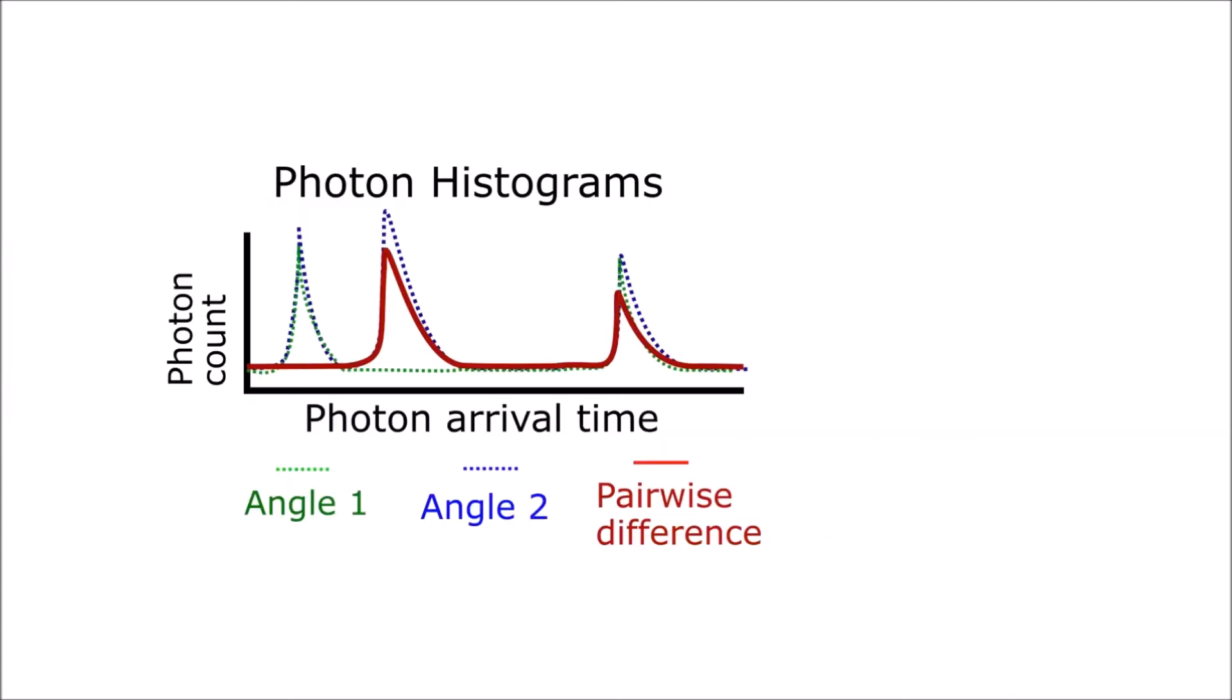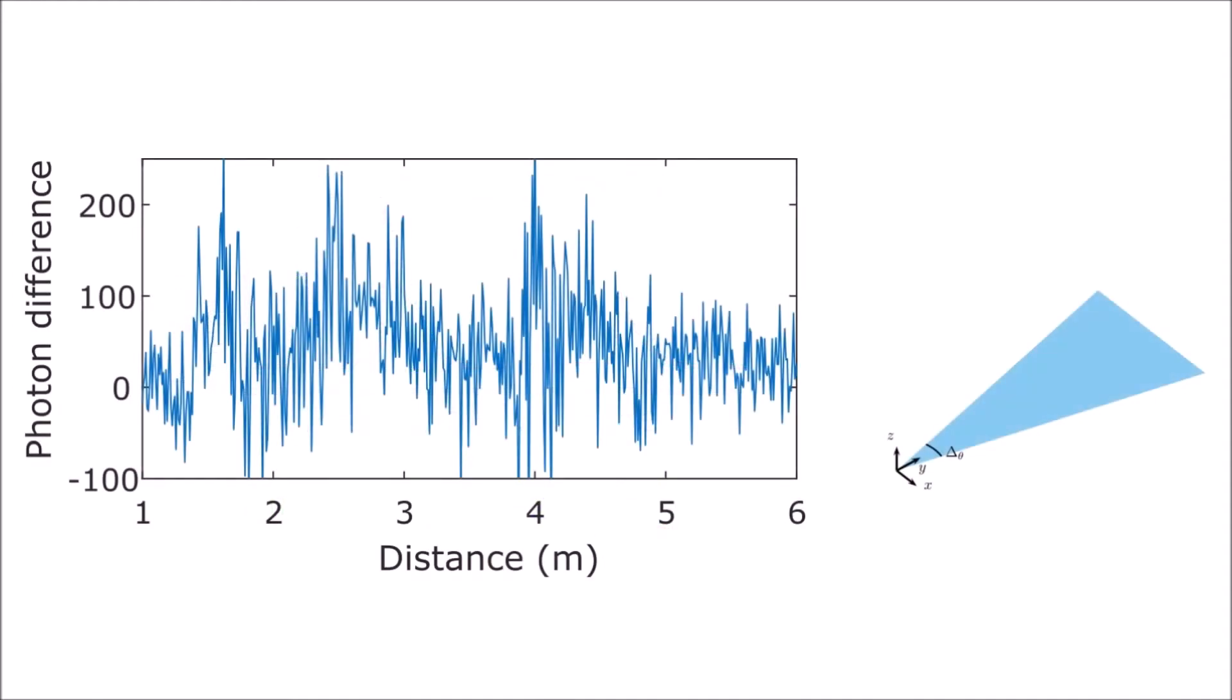In reality, our measurements are extremely noisy. The photon counting process results in Poisson's shot noise in our measurements, and taking difference between these measurements results in Skellum distributed noise. In addition to this, the laser light from the floor spreads out in all directions.